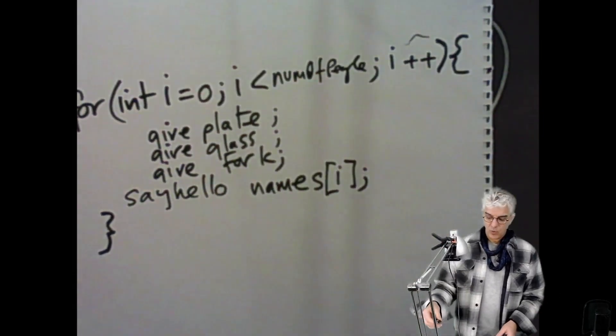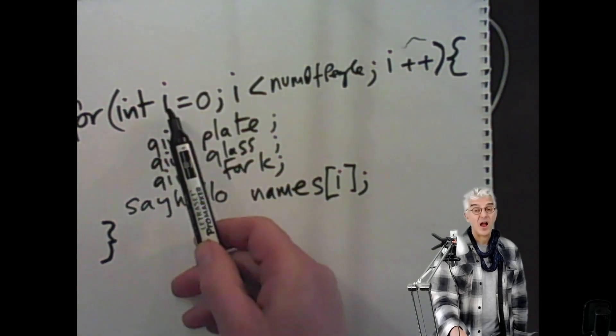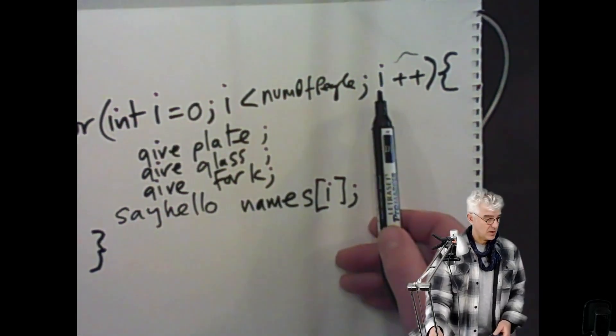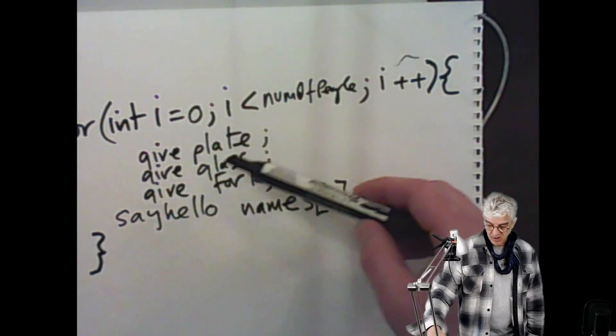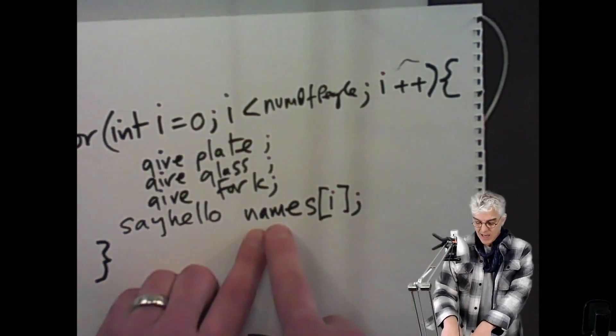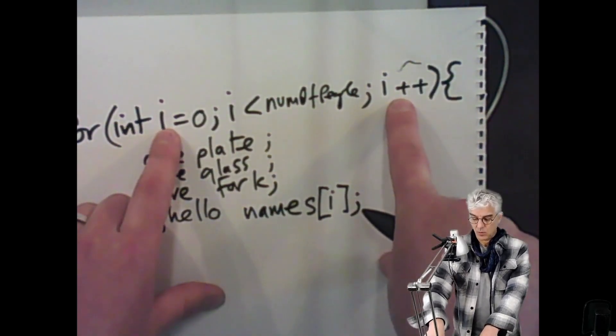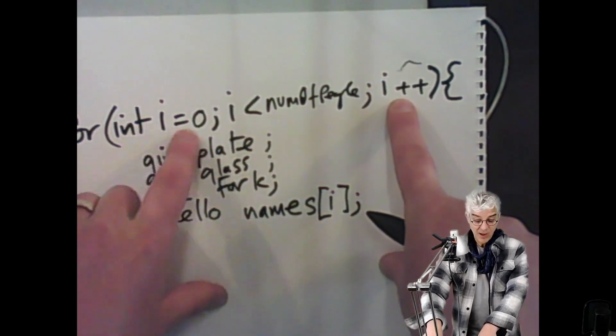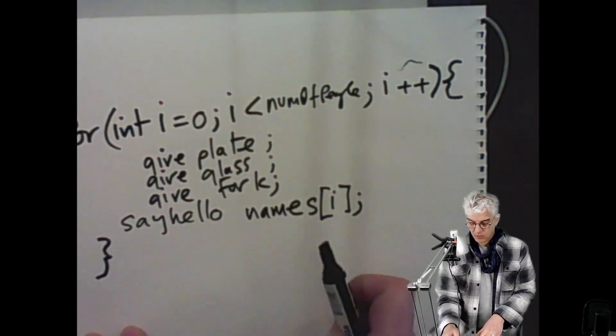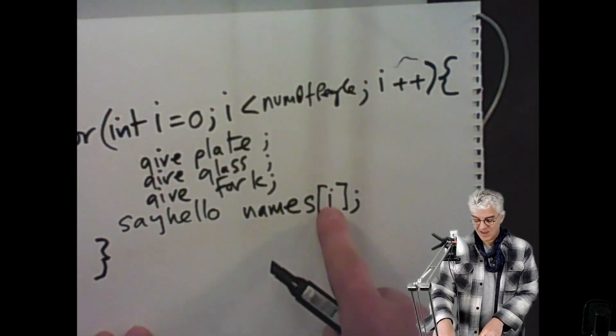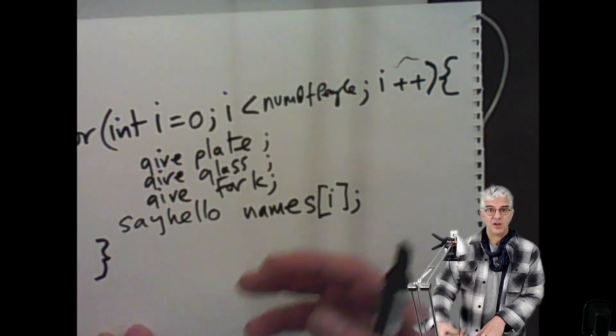So when we run this, we look in the integer variable number of people, and that's how many times we loop. Starting with an integer i being zero, and each time we count it up by adding one to it. So we run it, and we say i is zero, give a plate, give a glass, give a fork, say hello to whatever name is in our vector at position zero. The next time we run it, we add one to i. So i starts out being zero, but now it's one. So we go through, we give a glass, fork, plate, and then we say say hello to, look in the vector, this list, names, at position, what is i? i is now one, position one, and then position two, position three, and it retrieves Jane, Jeff, etc. from our names.